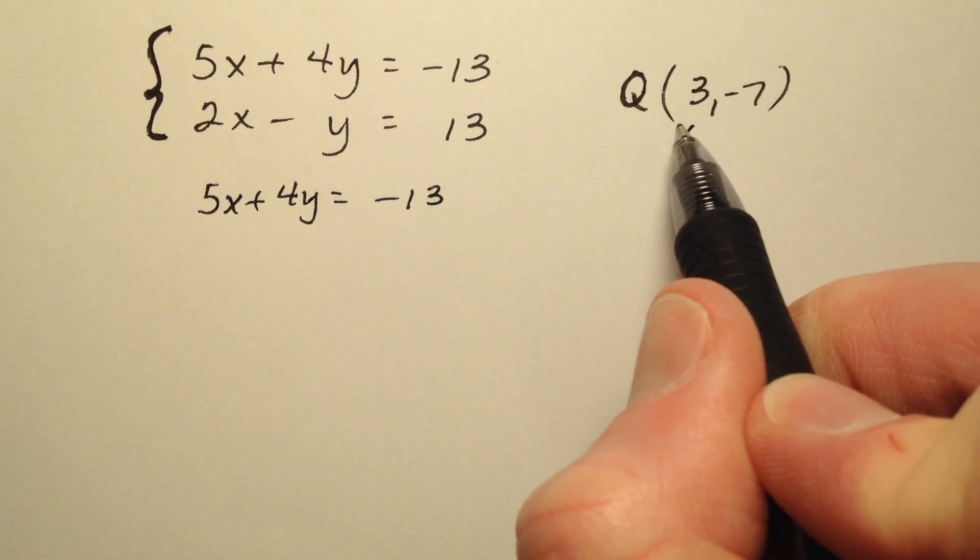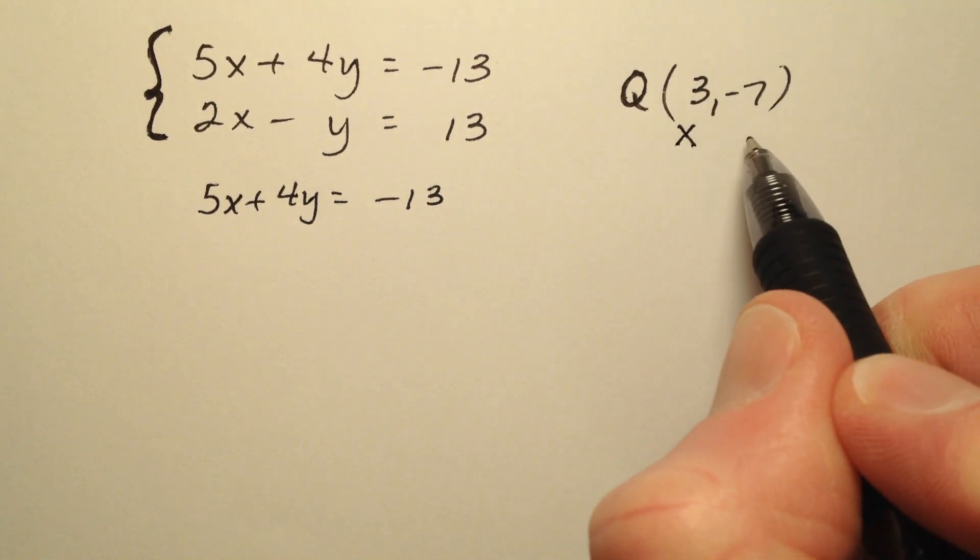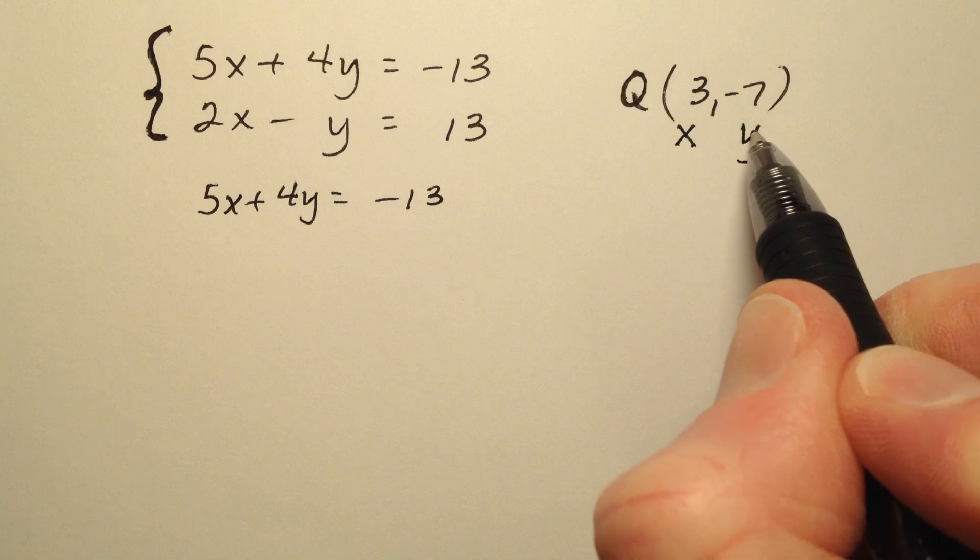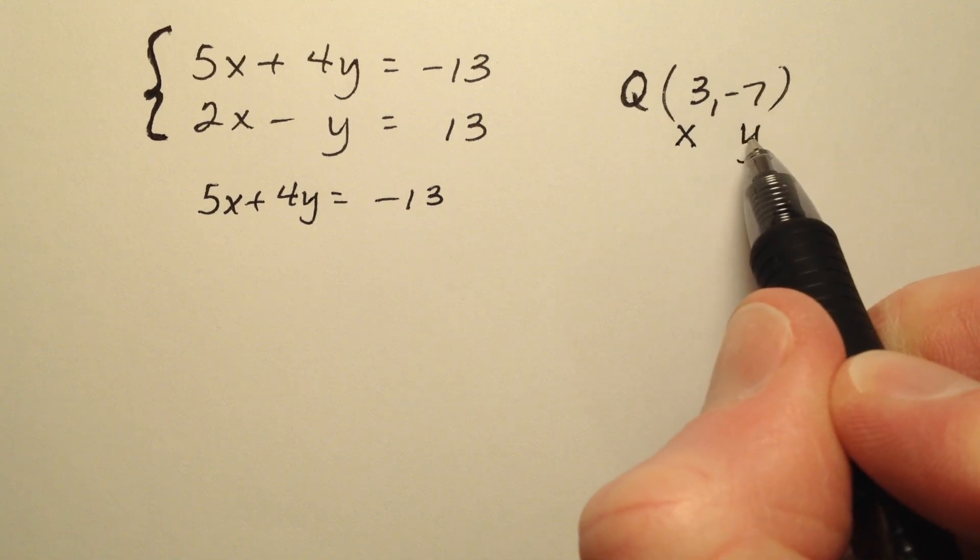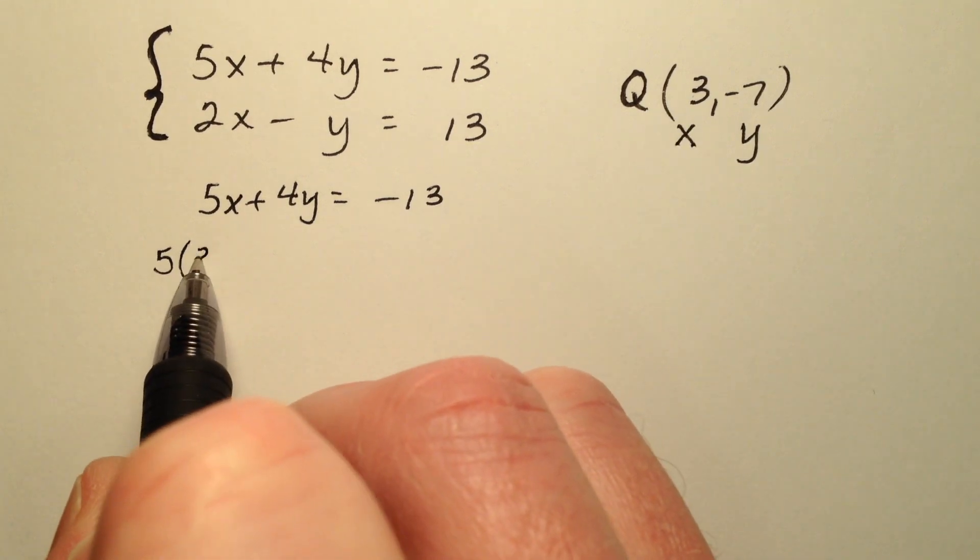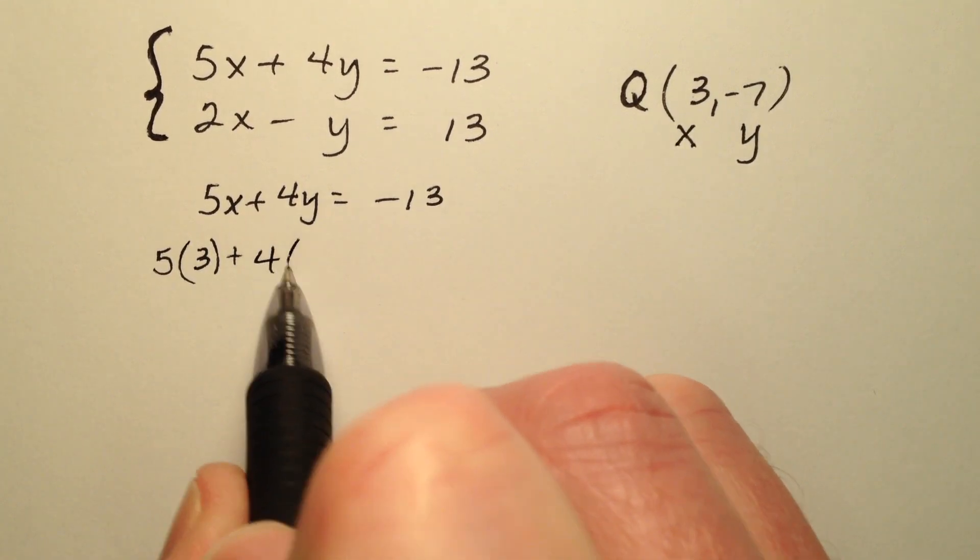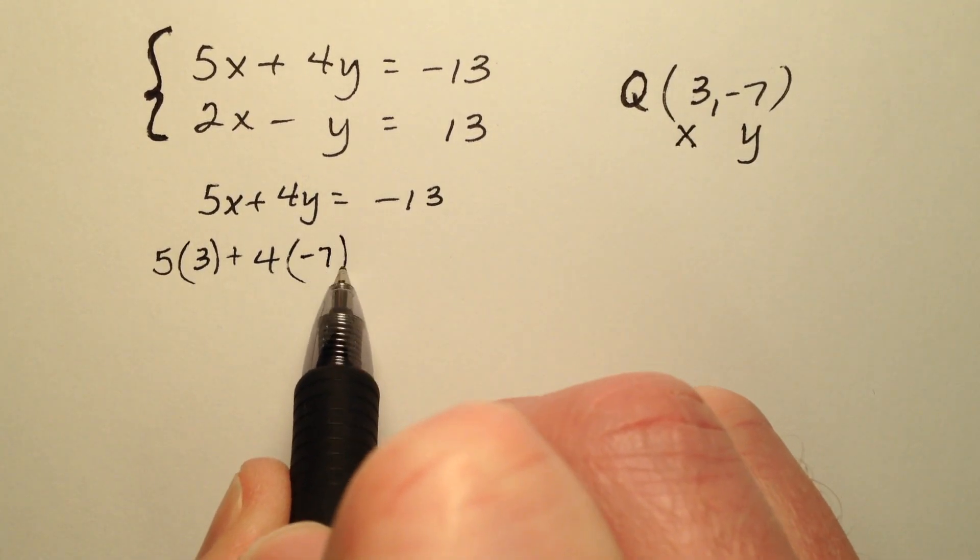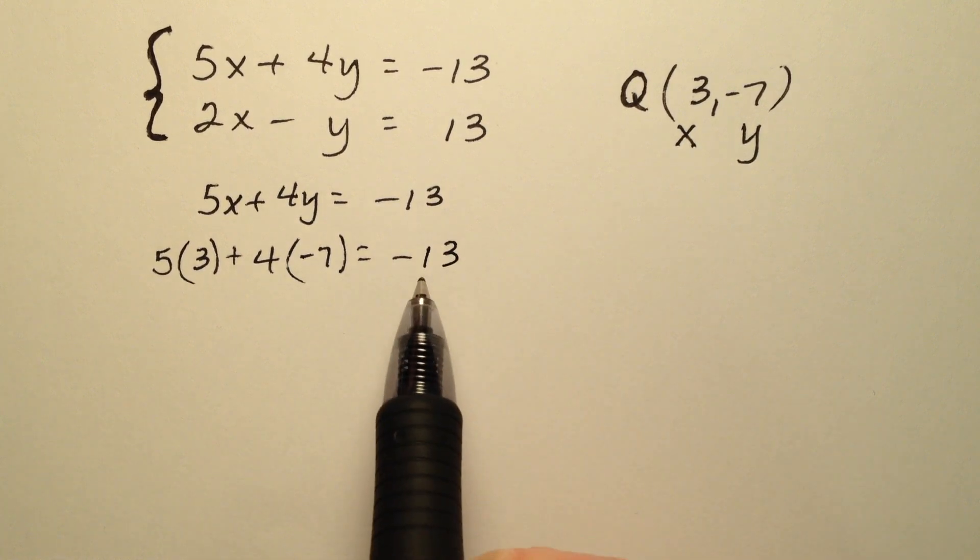3 is going to be my x coordinate or my x value I can use, and negative 7 is my y coordinate or the y value I'm going to use. So 5 times my x, which is 3, plus 4 times my y, which is negative 7, we're going to see if that equals negative 13.